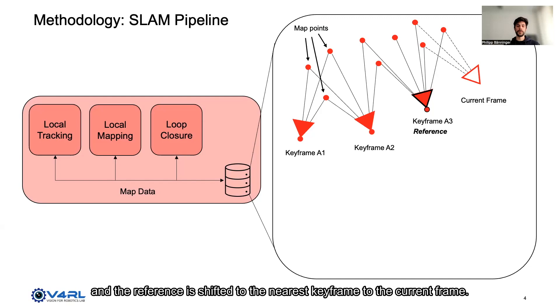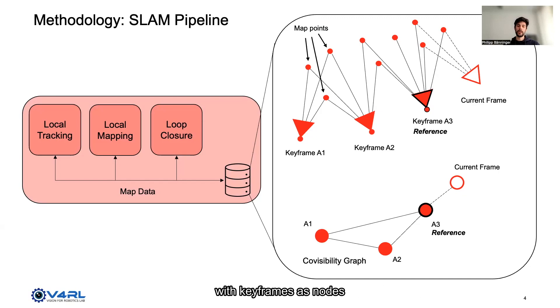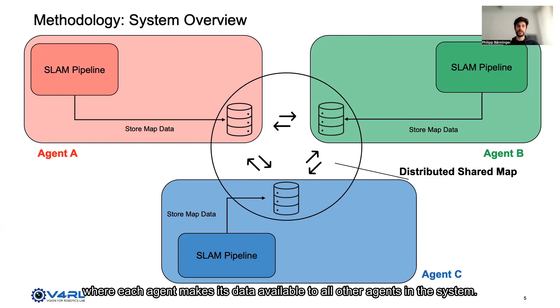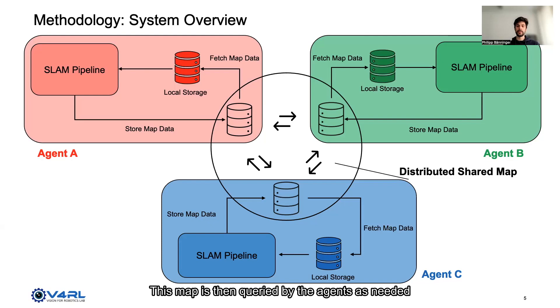From this representation, we derive a covisibility graph with keyframes as nodes and edges derived from common map point observations. Multiple agents store their map data in a distributed shared map where each agent makes its data available to all other agents in the system. This map is then queried by the agents as needed to fetch map data into a local storage and make it available to their SLAM pipeline. In this manner, map data produced by any agent in the team is made available to all other agents.